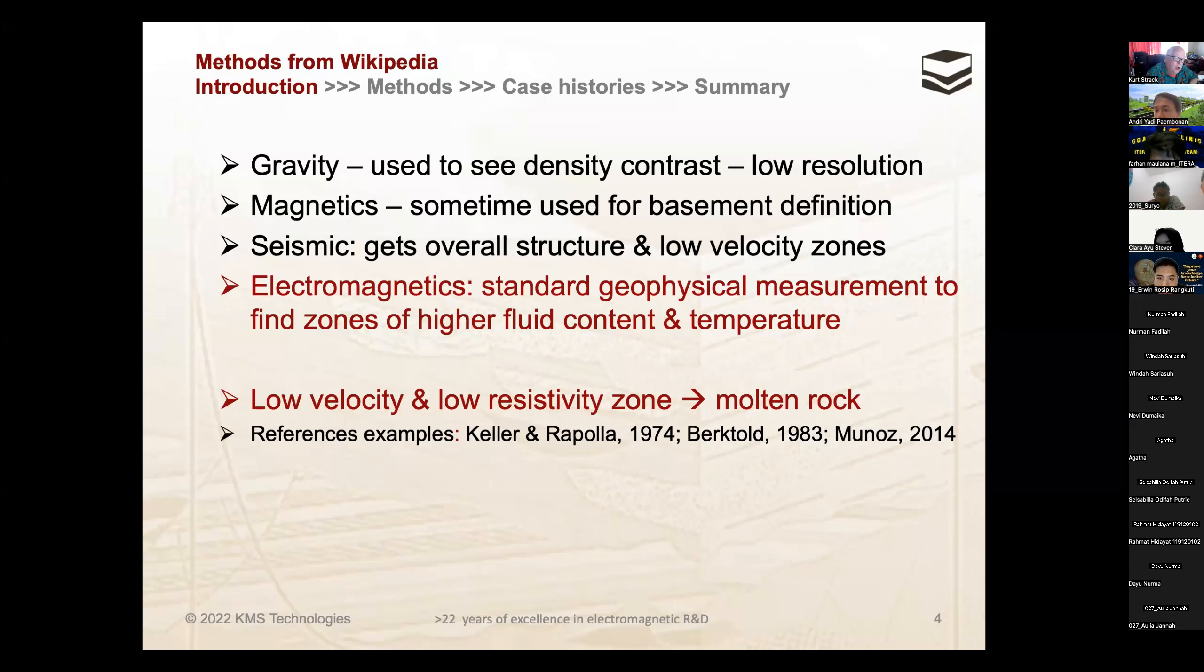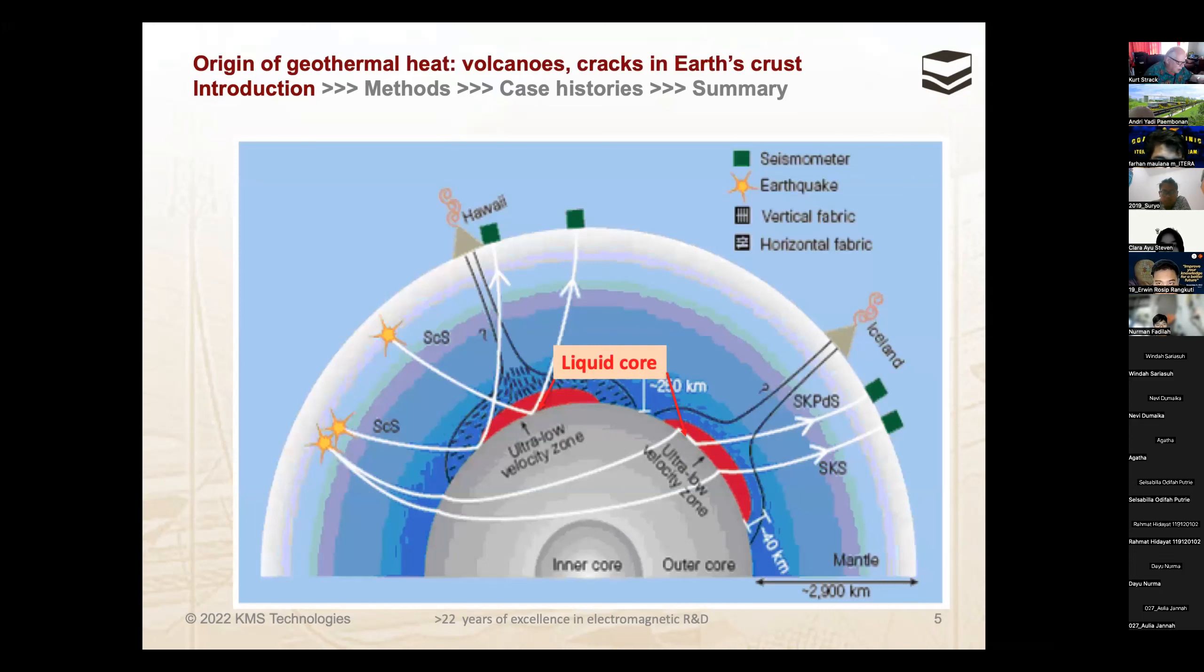Low velocity zones mean that seismic velocity is slower than in rocks. In rocks, the seismic velocity is about 1.7 to 2 kilometers per second. In volcanic rocks, it can go as high as 6 kilometers per second, and in carbonate rocks around 4 kilometers per second. If you have a low velocity zone and a low resistivity zone at the same place, you usually look at molten rock, lava.